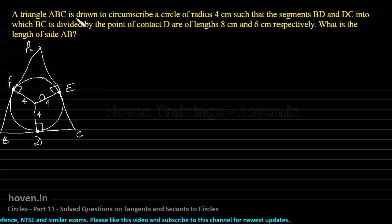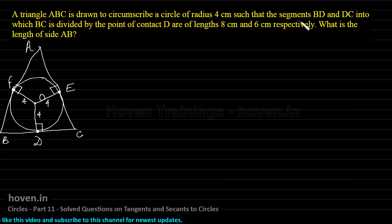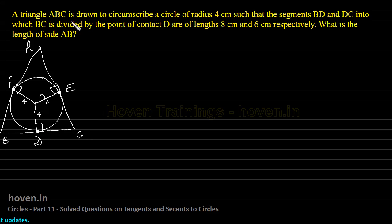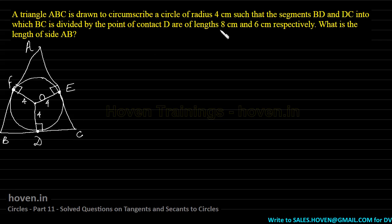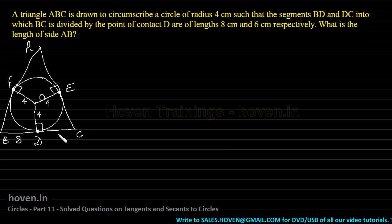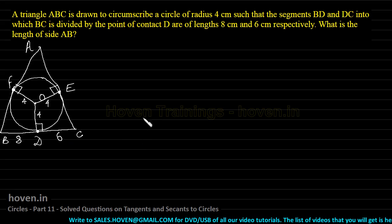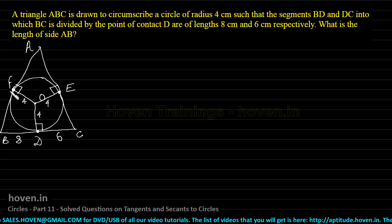Triangle ABC is drawn to circumscribe a circle of radius 4. The segments BD and DC, into which BC is divided by the point of contact D, have lengths 8 and 6 respectively. We have to find out the length of side AB.